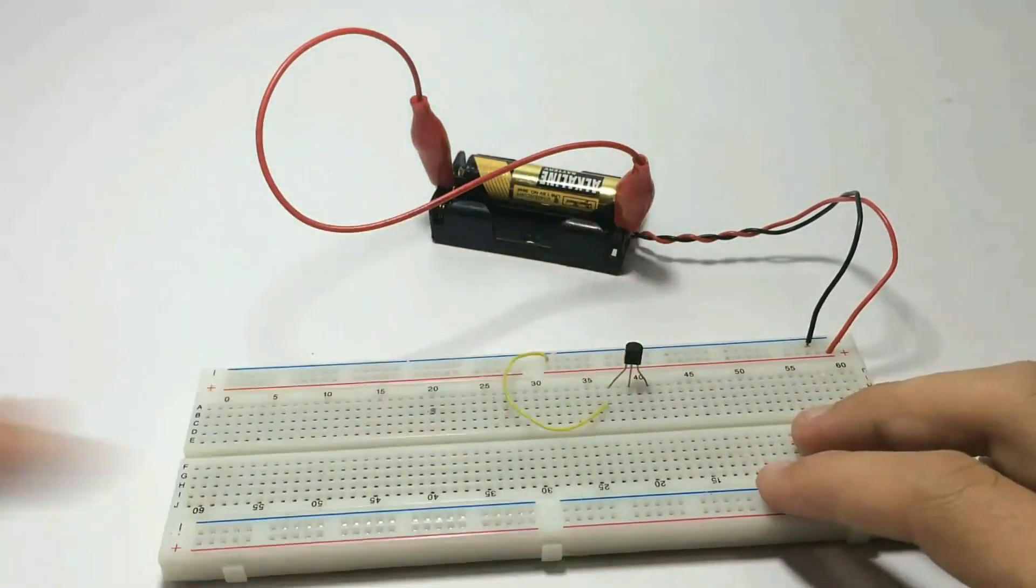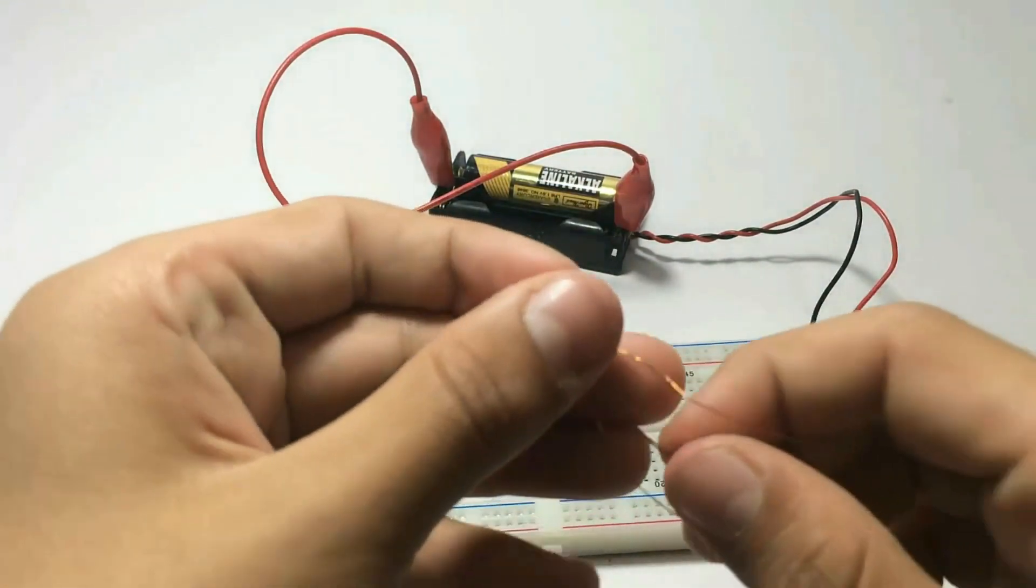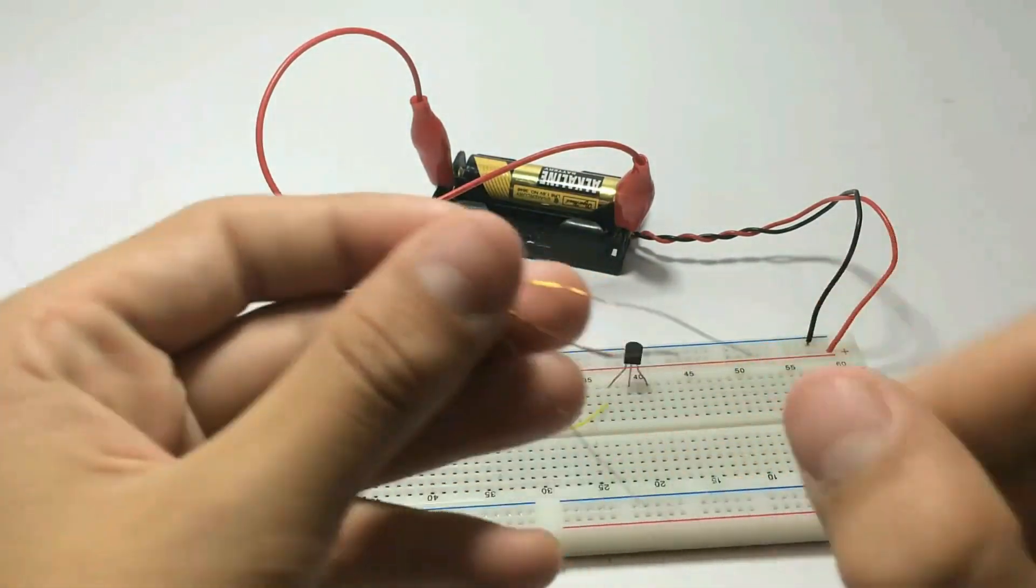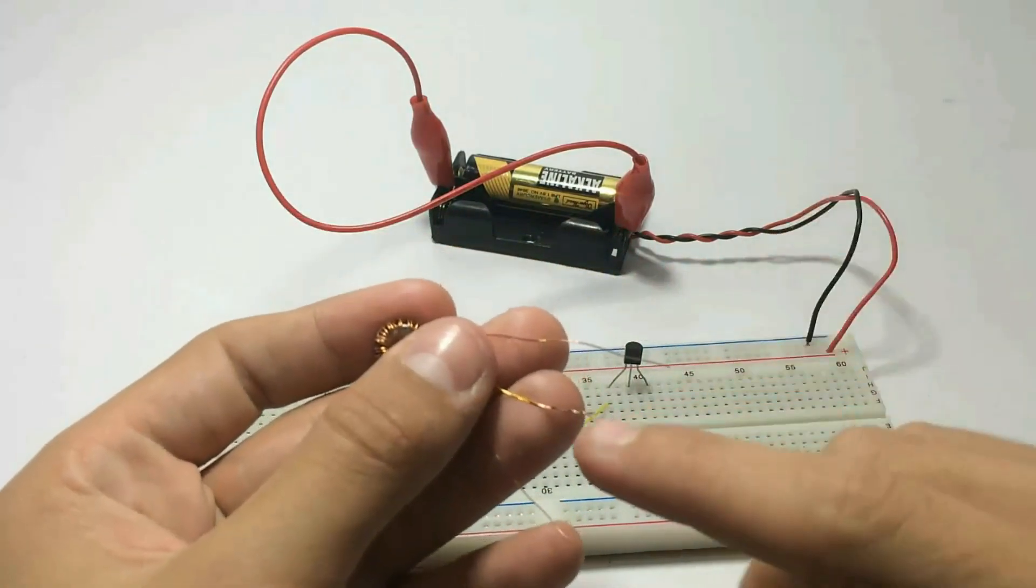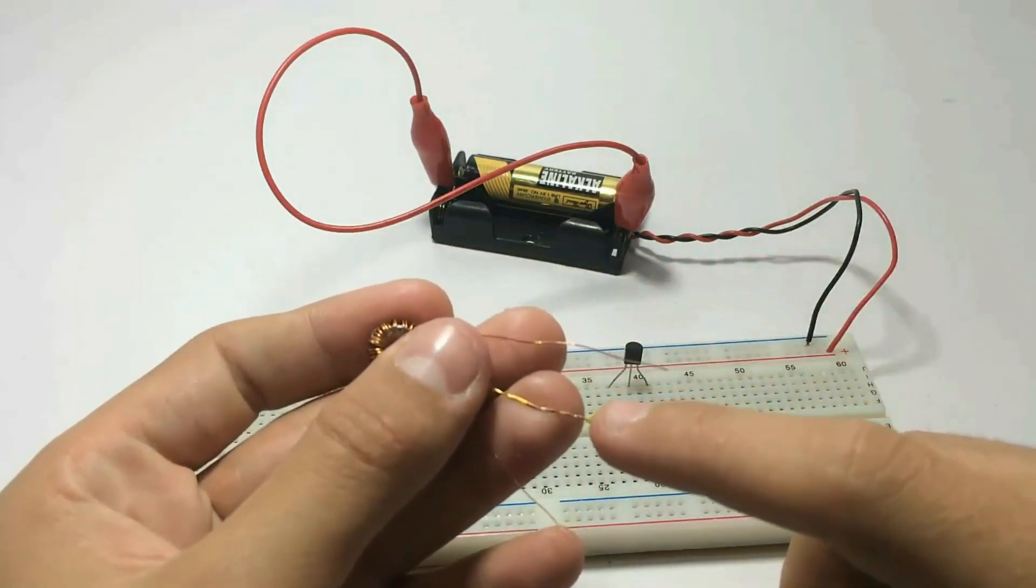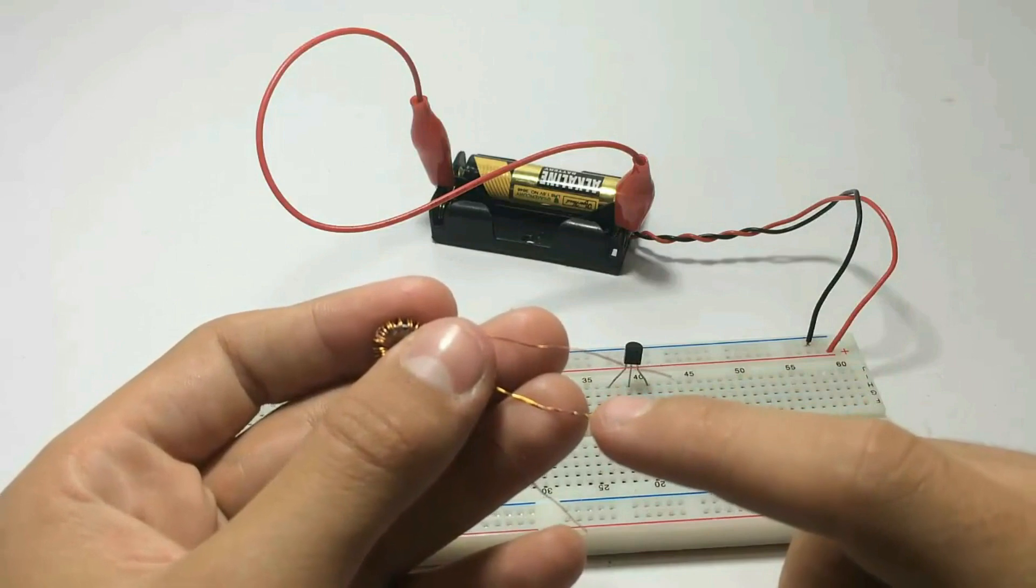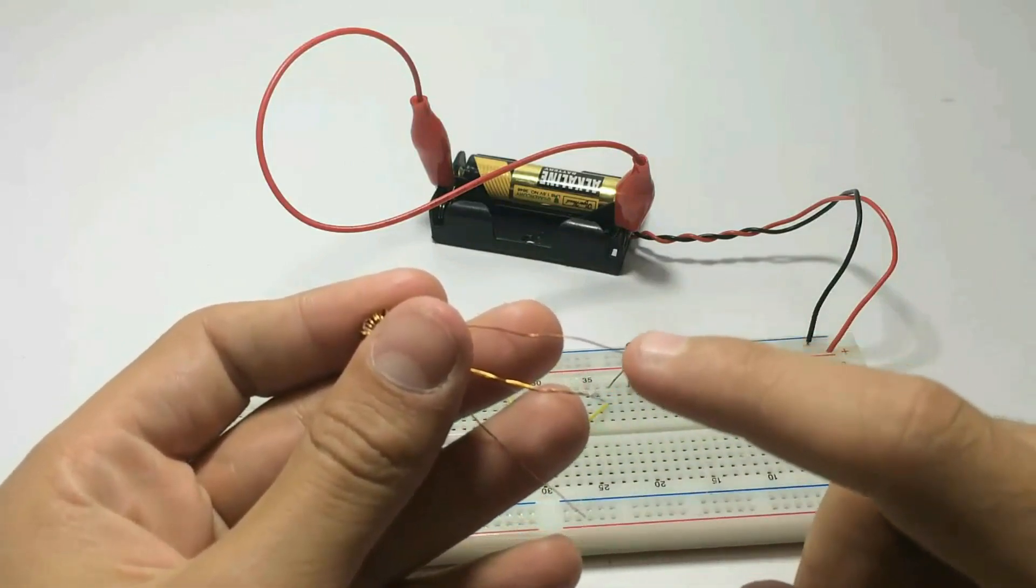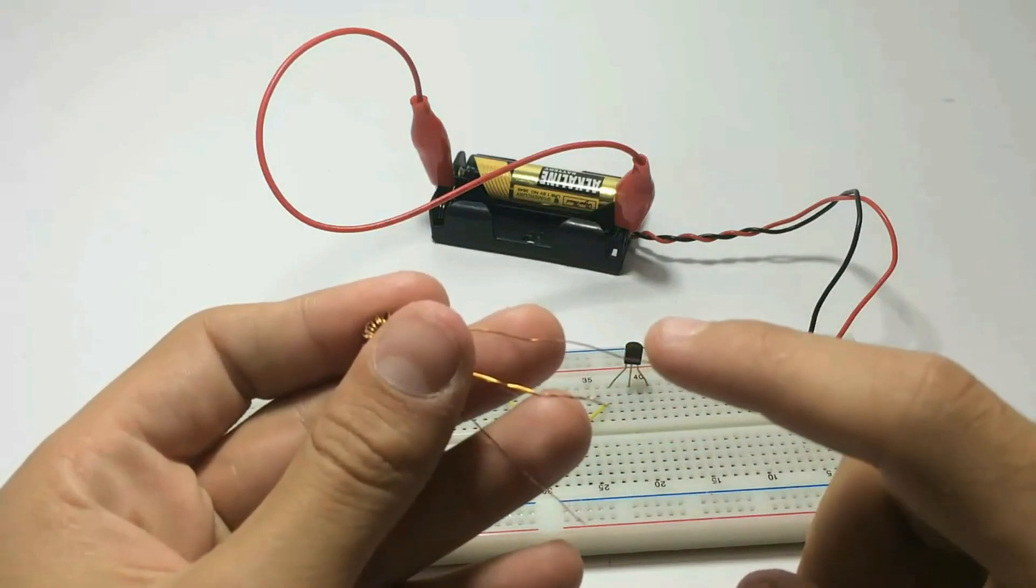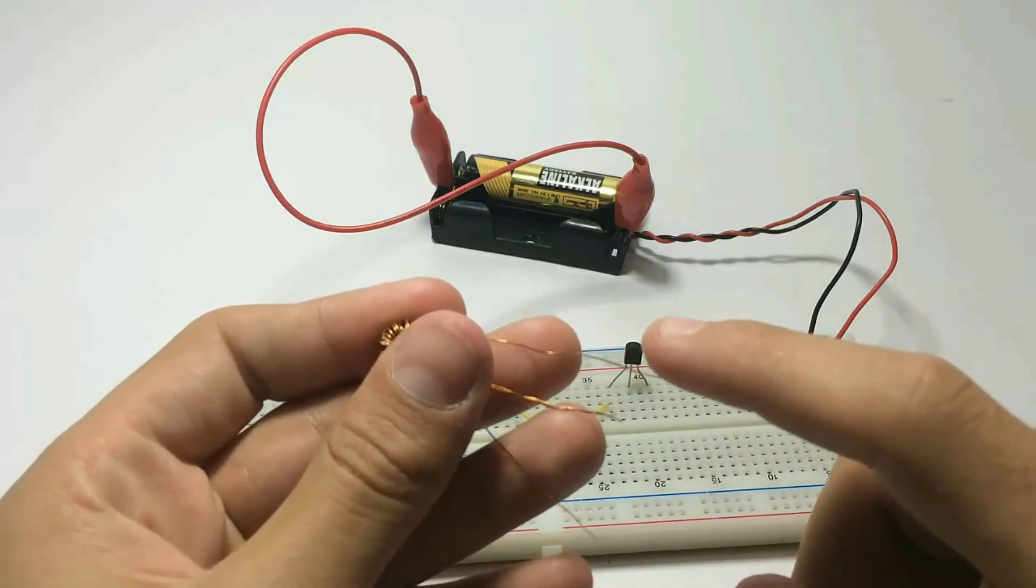And now it's time to place the ferrite core. The middle one will be connected to the positive side, and the left one is connected to the emitter and the right one connected to the 1K resistor. And now you can place it.